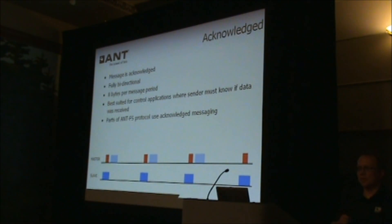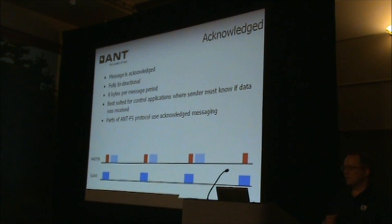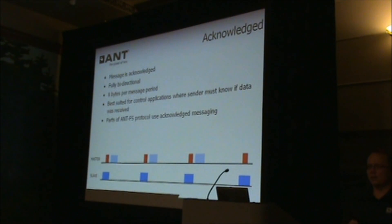A good example of this is a button press. If you press a button, you generally want to know whether that button message got through or not, so you need to know whether you need to retry or not. These messages are not automatically retried by ANT, so your application microprocessor will be informed whether the message was successful or not, but your application MCU will need to handle whether or not it will need to retry sending the message.